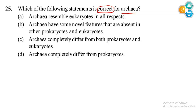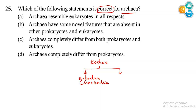Now let's look at the two classes of bacteria. One is Eubacteria, which is true bacteria — we also call it true bacteria. The other is Archaebacteria, which is false bacteria. Basically, they are placed in a different group based on their cell membrane structure.